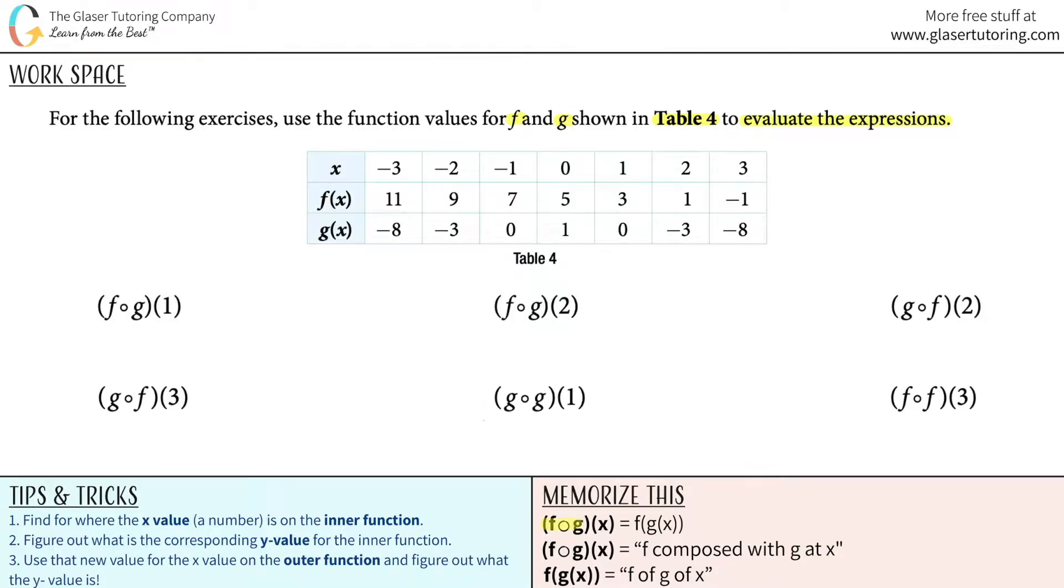Memorize this. This notation that they gave you always equals the other composite function notation with the parentheses inside the parentheses. So just know that the one that they gave you first is the outer function, and the g that is stated next is the inner function. So I'm going to just write each one out into the other notation and take it from there.